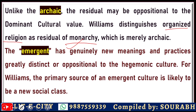The third variety is the emergent. It has genuinely new meanings and practices, greatly distinct or oppositional to the hegemonic culture. So residual is from the past, dominant is the present, and emergent is the future. Emergent is a direct challenge to the dominant values. For Williams, the primary source of an emergent culture is likely to be a new social class.